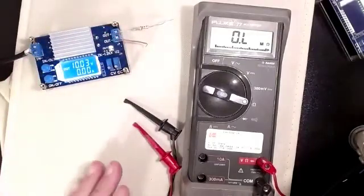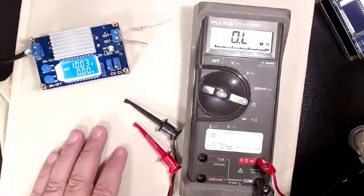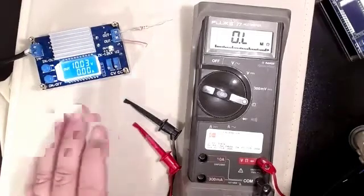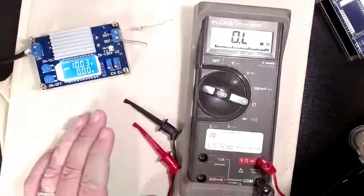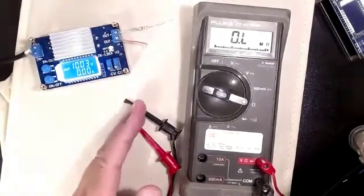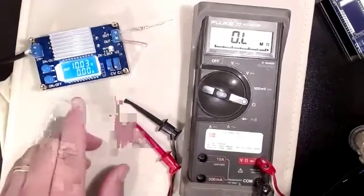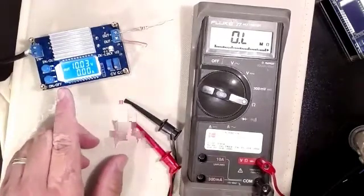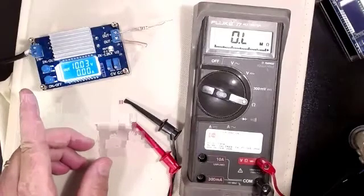It's a buck converter which means it can only reduce voltage, and the dropout is one volt. So that means if you've got 32 coming in you can have up to 31 going out. Right now you can see I have 10 volts going out, so I need at least 11 volts going in.